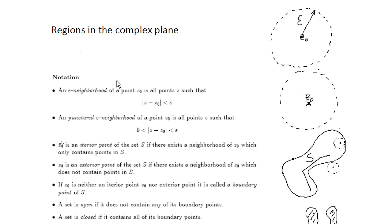Z0 is an interior point of some set S if there exists a neighborhood of z0 which only contains points in S. So here I have written this set capital S and here is some interior point. I can find some circle where the point is a center and this circle contains all points. All points inside this circle is contained in S.